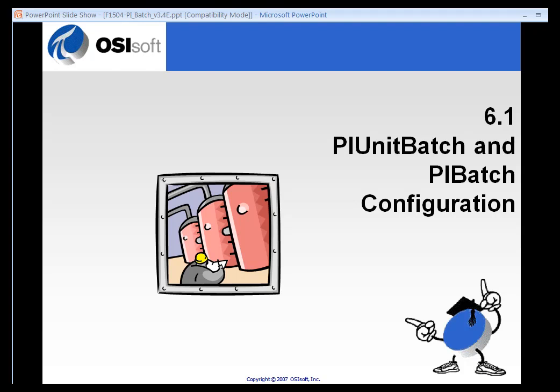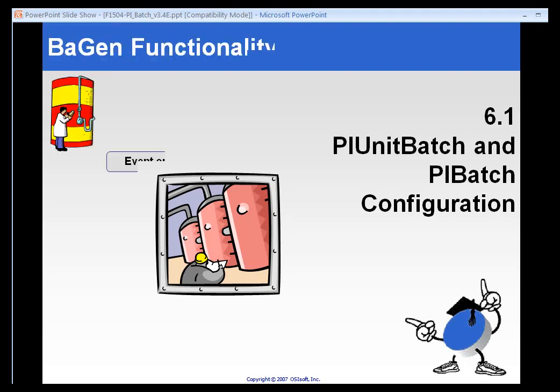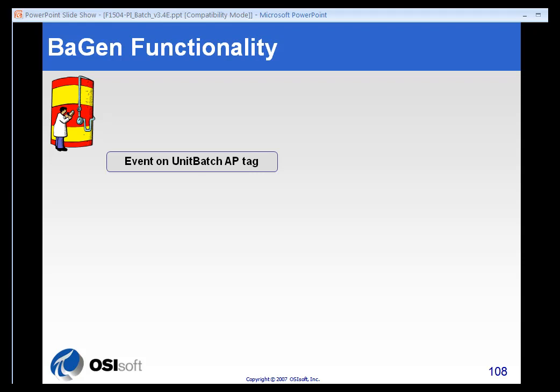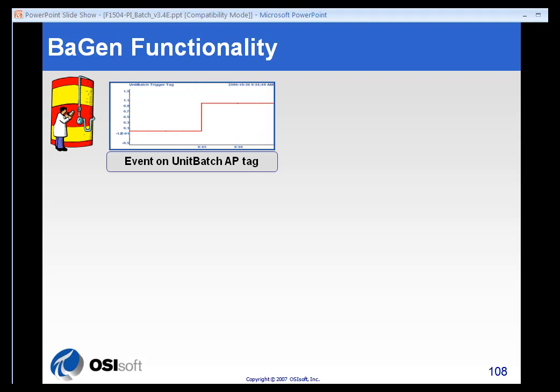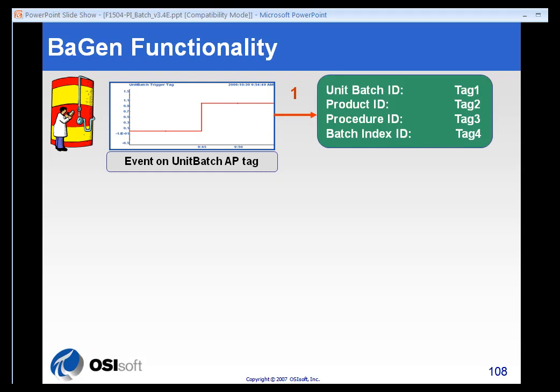Everything in the batch database is triggered at the unit batch level. Let's first look at the unit batch and subsequent PI batch configuration in terms of the PI batch generator. There is some event that triggers the start of the batch — this is usually referred to as the active tag or the trigger tag — and that tag will change its state to indicate that the batch has started.